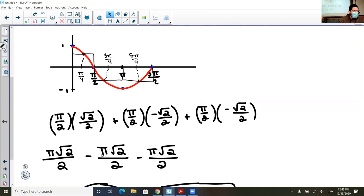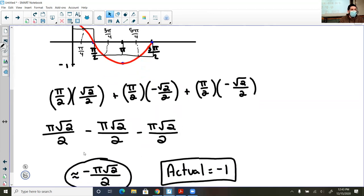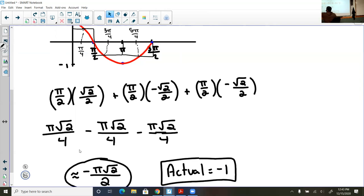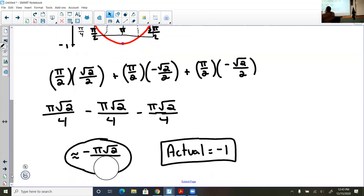And so when I combine these, I go ahead and multiply them out, and then I get approximately negative pi root 2 over 4.